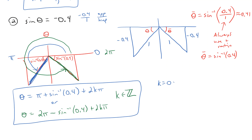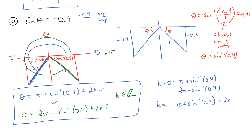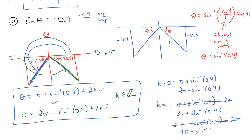For four specific solutions: with k=0, the first angle is pi + sin⁻¹(0.4) and the second is 2pi − sin⁻¹(0.4). With k=1, adding 2pi gives pi + 2pi = 3pi, so the third is 3pi + sin⁻¹(0.4), and 2pi + 2pi = 4pi, so the fourth is 4pi − sin⁻¹(0.4). Those are our four specific solutions.